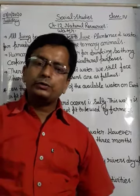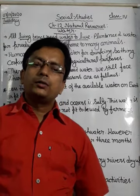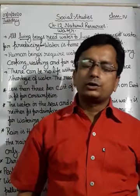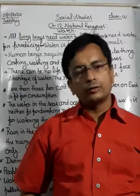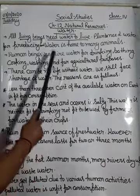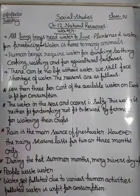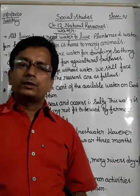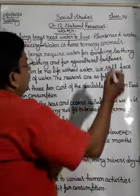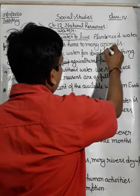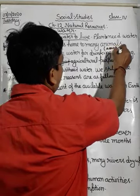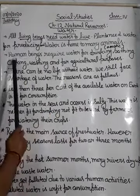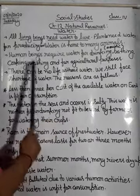Plants need water for producing food. Plants make their food in the presence of sunlight and water. Without water, they cannot survive on the Earth. Water is also home to many animals — many animals live in water. Such types of animals are called aquatic animals.